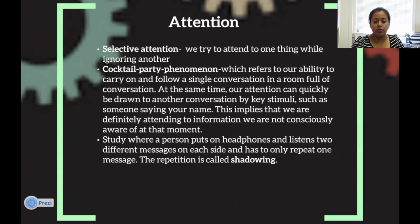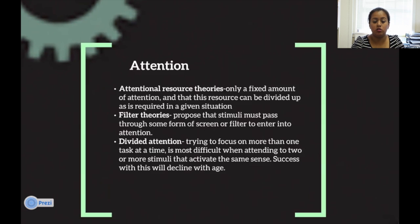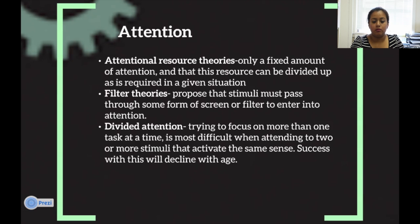In a shadowing study, a person puts on earphones and listens to two different messages, and they only have to repeat one message — this repetition is called shadowing. Attention or resource theories hold that only a fixed amount of attention — a limited resource — can be divided up as required for a given situation. Filter theories propose that stimuli must pass through some sort of screen or filter to enter into attention. Divided attention involves trying to focus on more than one task at a time, and is more difficult when attending to two or more stimuli that are similar. Success with divided attention declines with age.